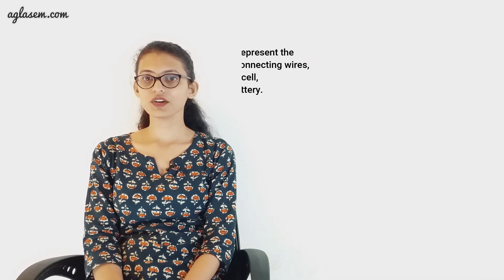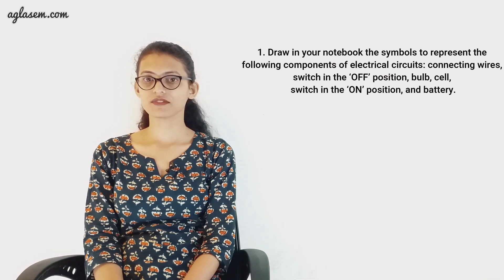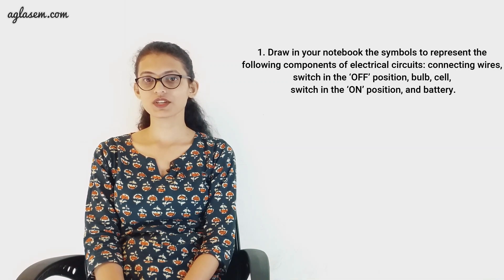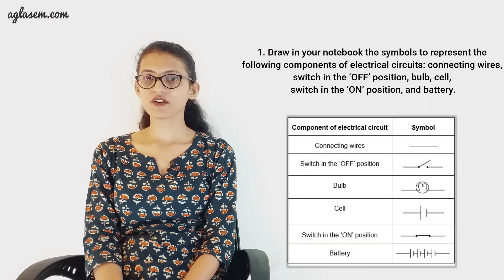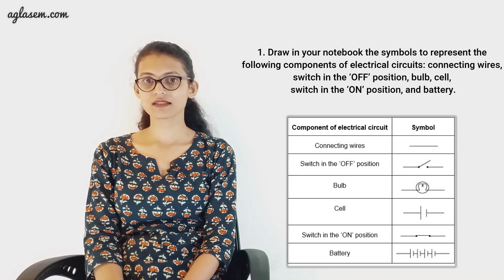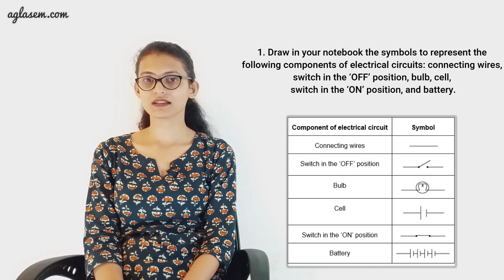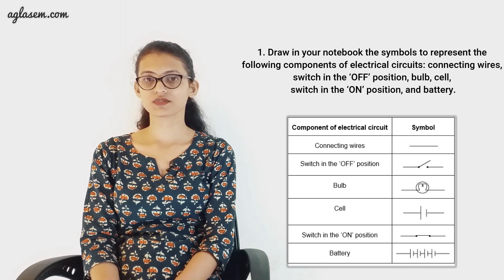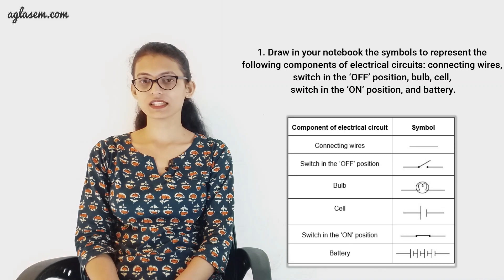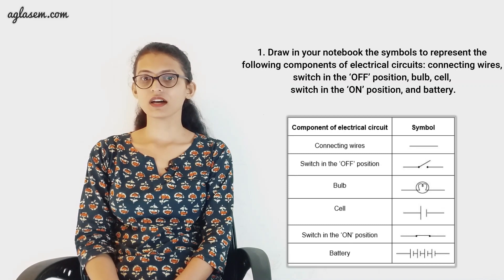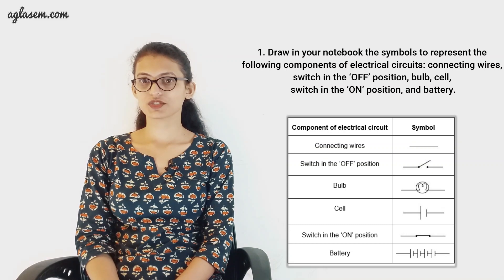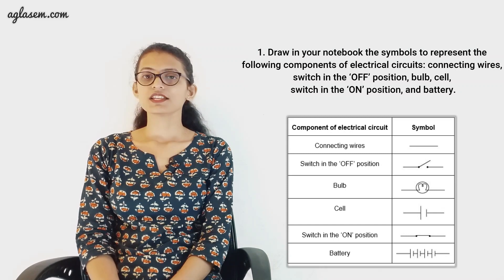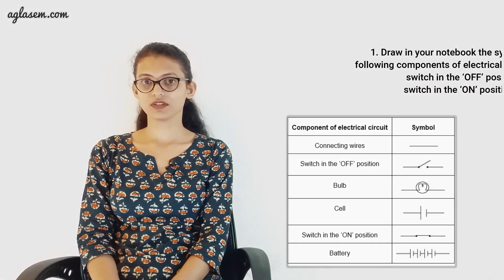Our first question is: draw in your notebook the symbols to represent the following components of electric circuits — connecting wires, switch in off position, bulb, cell, switch in on position, and battery. We have already drawn the required symbols. Connecting wires are represented by a straight line; switch by a broken line slightly tilted upwards; bulb by a bulge with a curl on a straight line; cell with two T's facing each other where the one on the right is shorter; switch on position shown by the broken line joined with another line at the top; and battery as a collection of cells. Take a note of this and draw the same in your notebook.